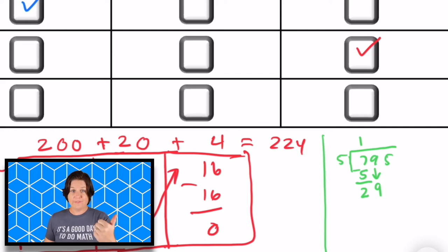Bring down the 9. 5 goes into 29: 5, 10, 15, 20, 25. So 5 times, which is 25. Subtract and we get 4. Bring down the 5. 5 goes into 45,